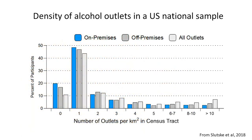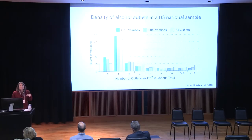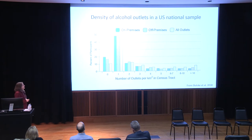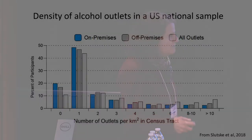This shows the density of alcohol outlets in a U.S. national sample of twins and siblings that I looked at, to give you an idea of what kind of neighborhoods these twins and siblings were living in. Along the x-axis is the number of outlets per square kilometer in the census tract — a smaller geographic unit, more like what you might think of as a neighborhood — ranging from zero outlets up to more than 10. I'm focusing mostly on the on-premises outlets shown in blue: places where you purchase alcohol to be consumed on the premises, like a restaurant or bar. Off-premises outlets — liquor stores, convenience stores, grocery stores — are also shown.